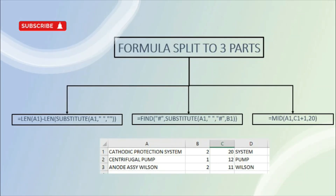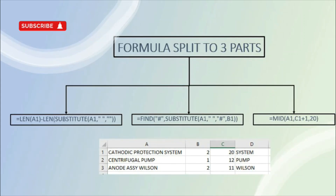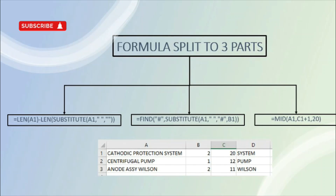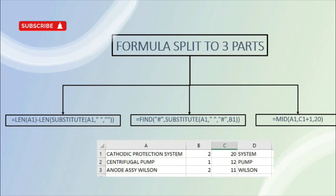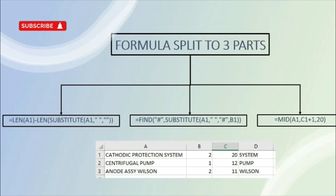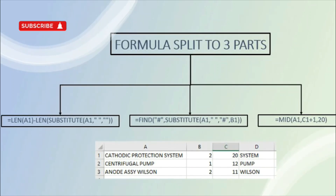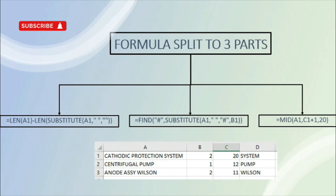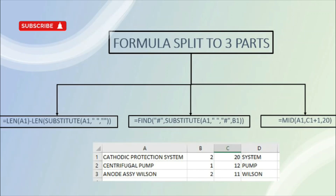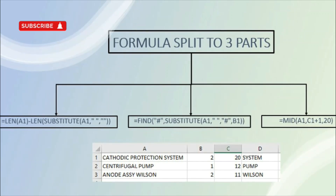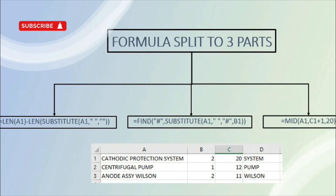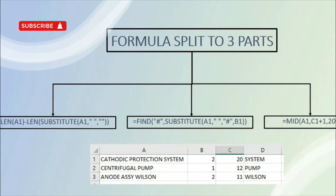To recap, I have split the formula into three parts shown in a simple chart. In the first box, you find the number of spaces. In the second box, you find the number of characters up to the last space. In the third box, you extract the word from the last space to the end of the word. This is the complete formula to extract the last word. Thank you.